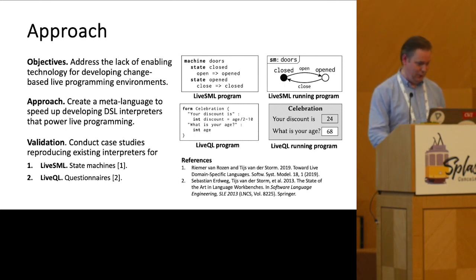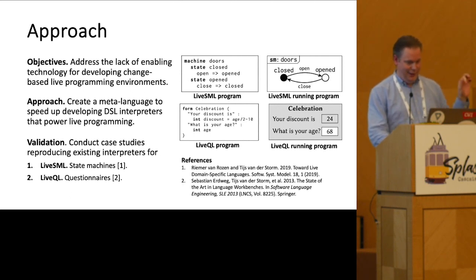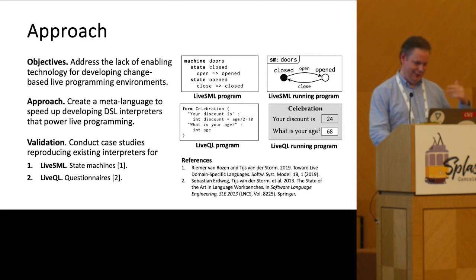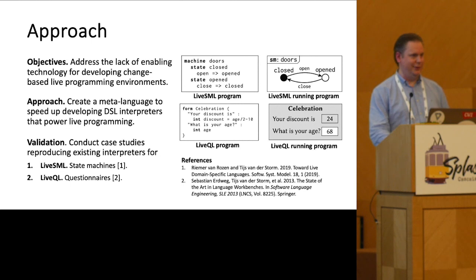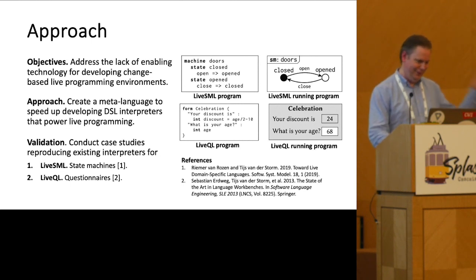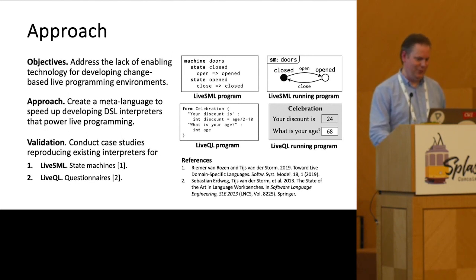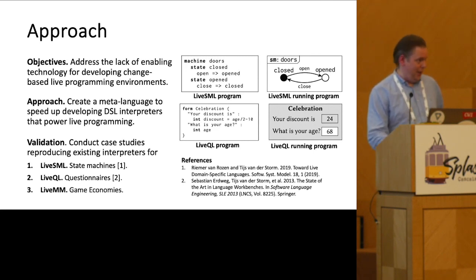The first case study is the live state machine language — simultaneously running state machines and editing them, migrating the current state if, say, you delete the current state. Live QL is a questionnaire language — yesterday there was the most influential paper award for the language workbench's paper where QL originates. In the live version, if you answer a question it can affect the visibility of other questions and computed questions, requiring computing a fixed point for getting all answers. And finally, the live machinations language for game economies.